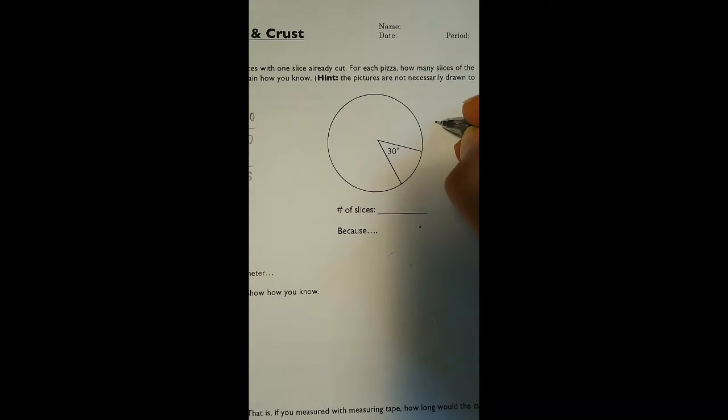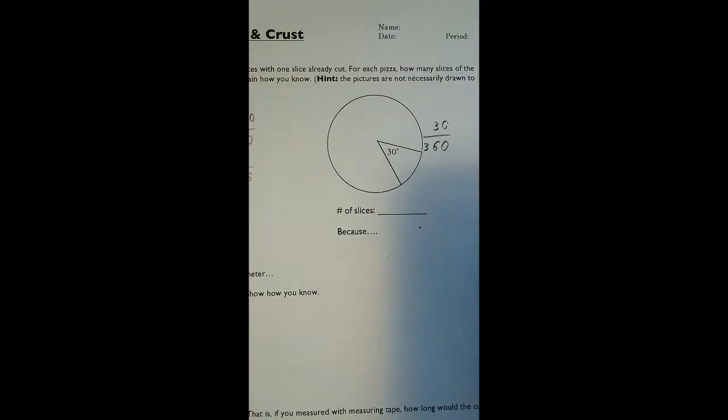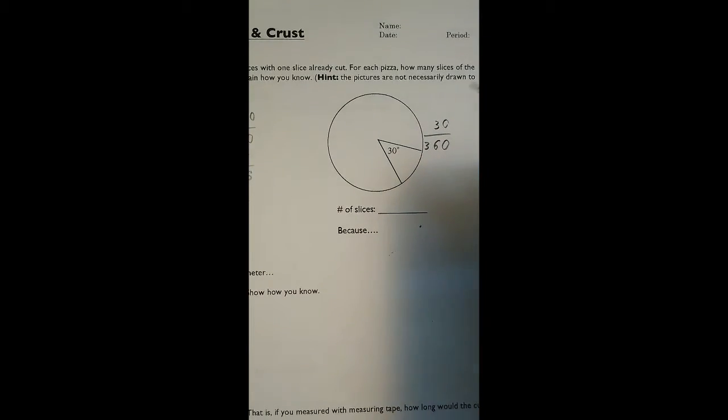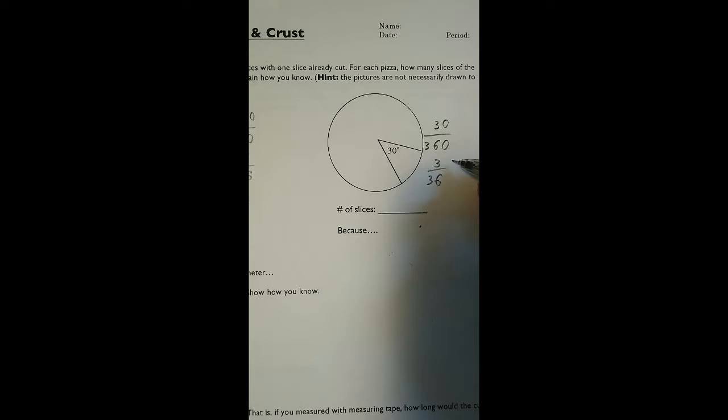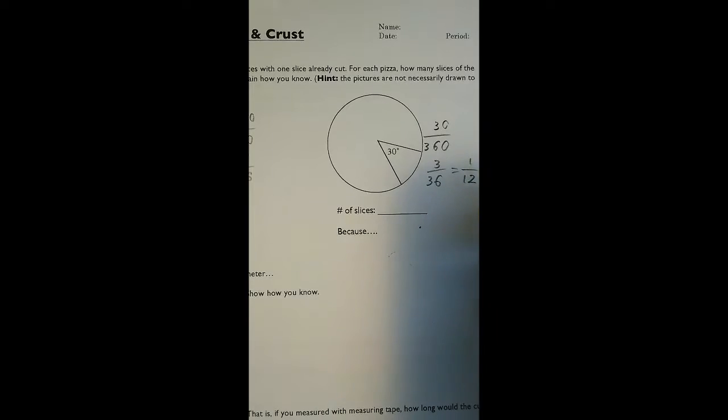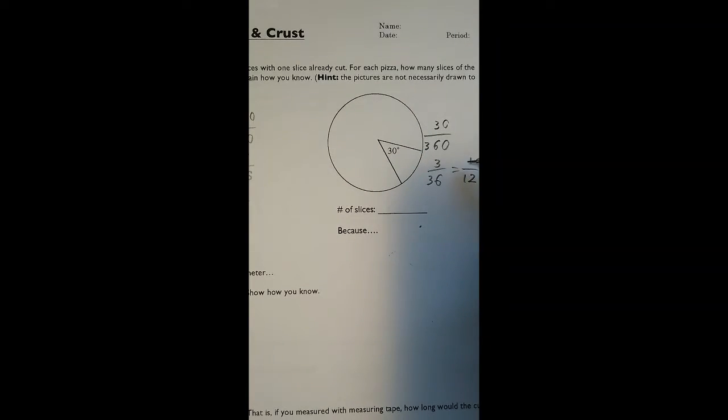So again, we put 30 over 360 and we see what we get. Again, the zeros cancel each other out. We get 3 over 36. 3 goes into itself once, 3 goes into 36 twelve times. So one slice here is going to be one twelfth of the pizza.